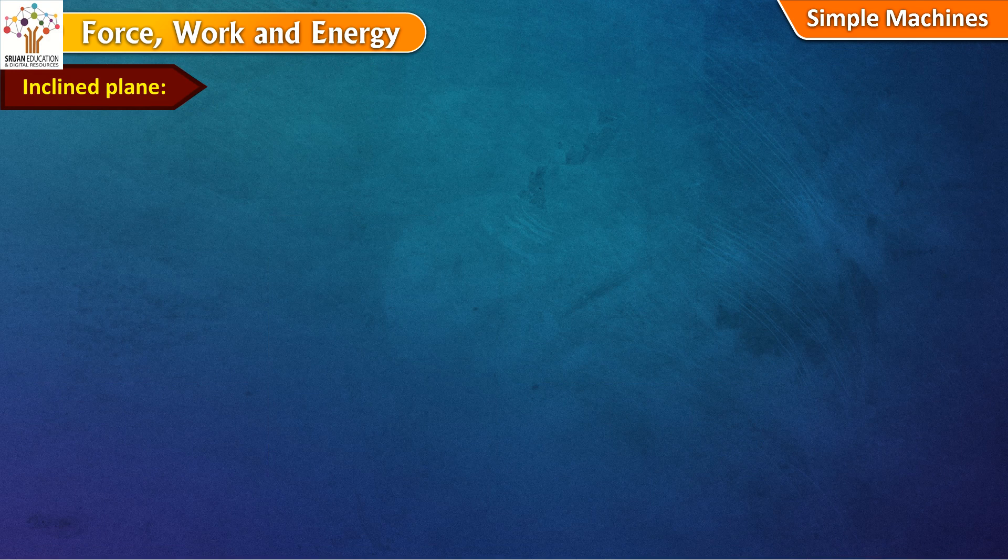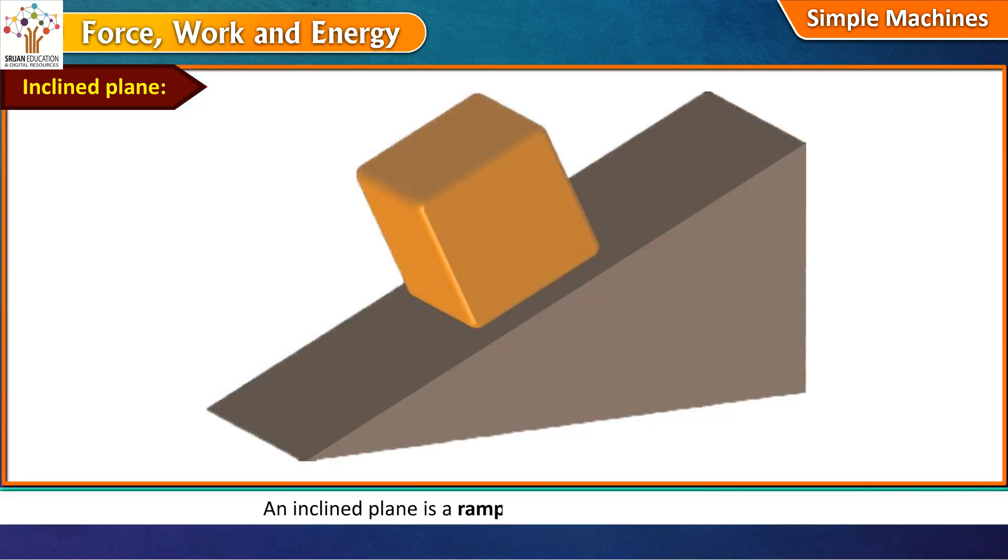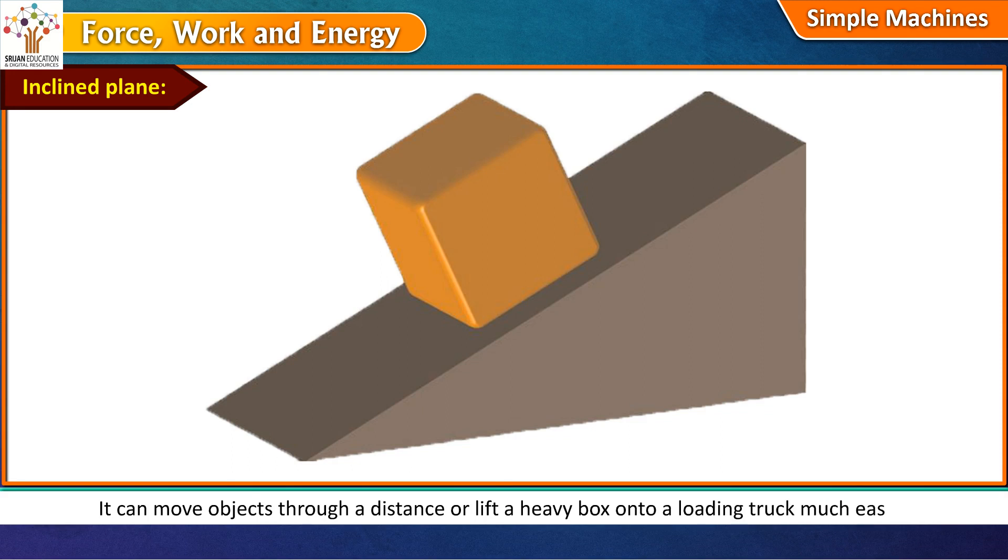Inclined plane. An inclined plane is a ramp used as a simple machine. It can move objects through a distance or lift a heavy box onto a loading truck much easily.